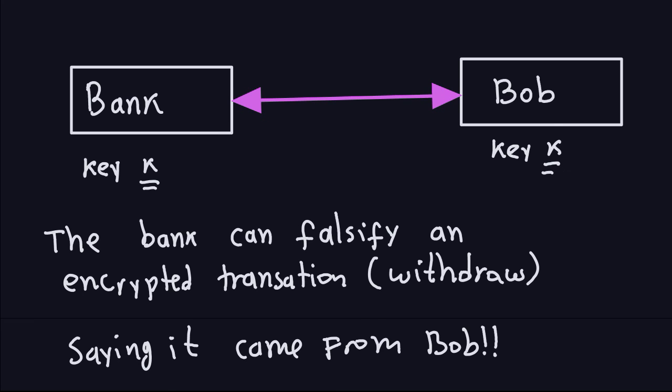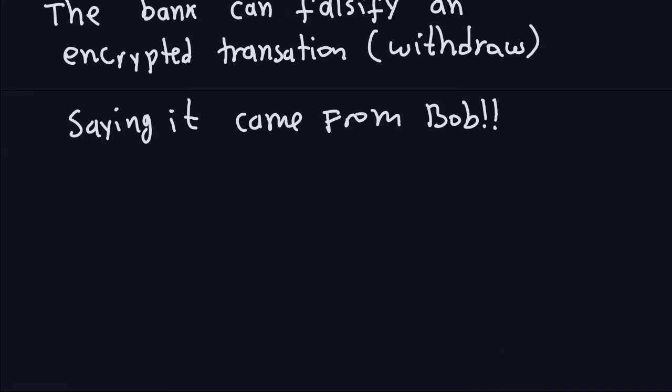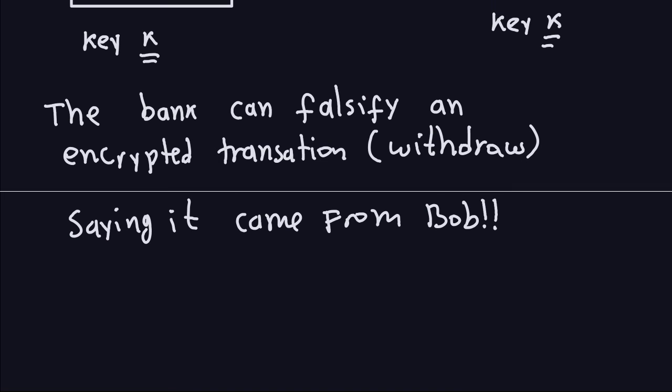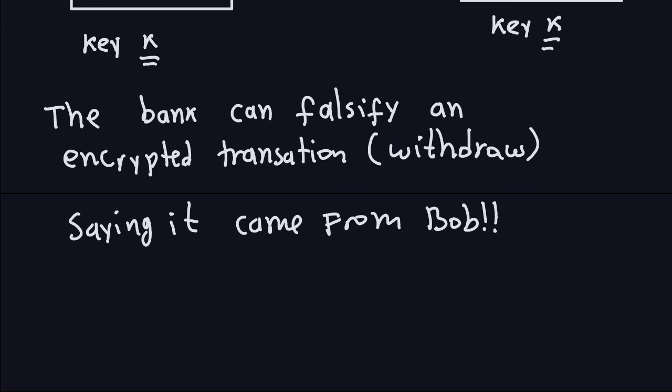So to summarize: the three problems with symmetric cryptography are — first, how do you establish and distribute keys; second, the number of keys grows too large; and third, there is no protection against cheating between parties. Asymmetric or public key cryptography solves these three problems. In the next video I'll discuss in more detail what asymmetric cryptography is and how it approaches solving the key sharing and other problems.